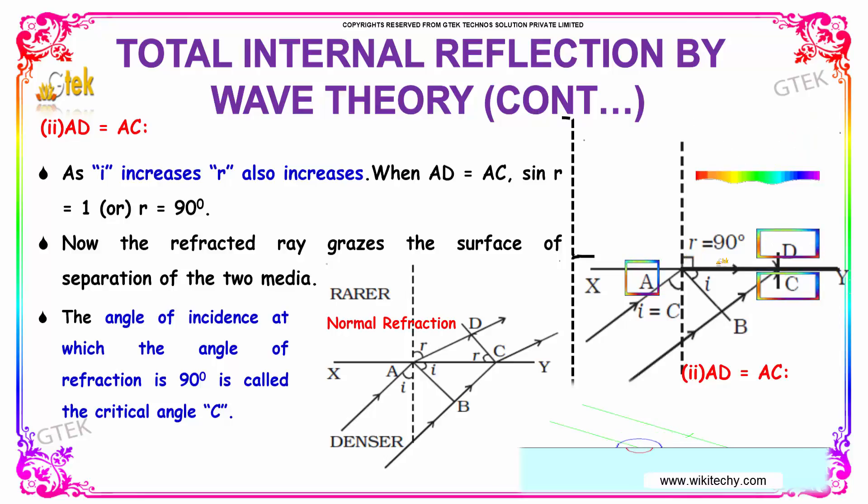Now the refracted ray grazes the surface of separation of the two media. The angle of incidence at which the angle of refraction is 90 degrees is referred to as critical angle C.